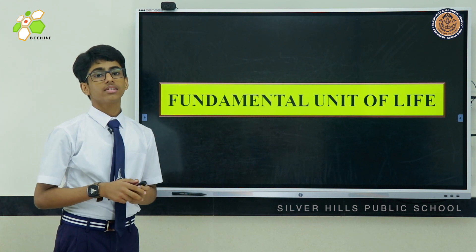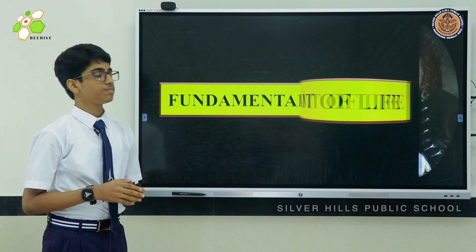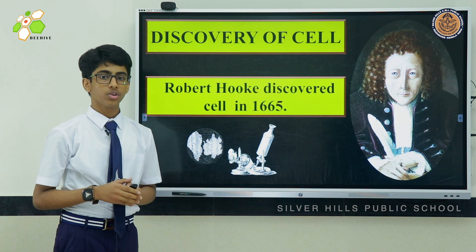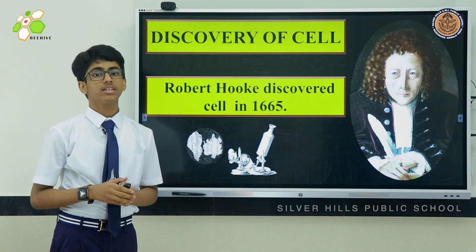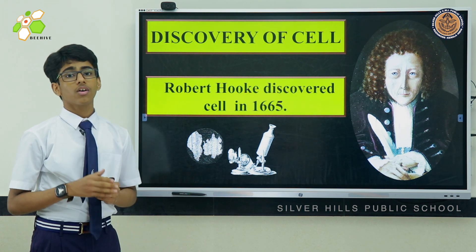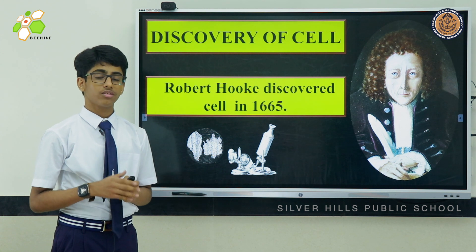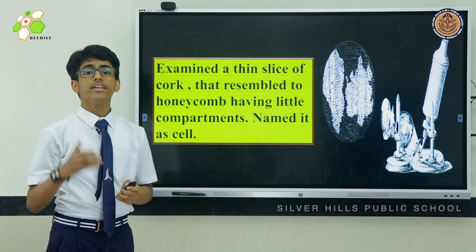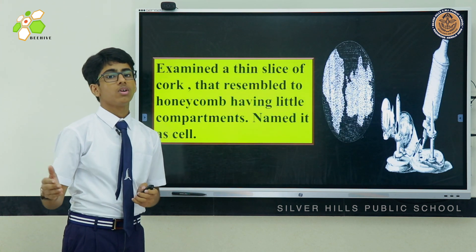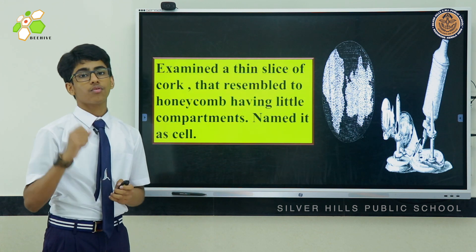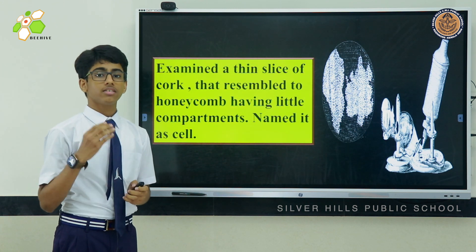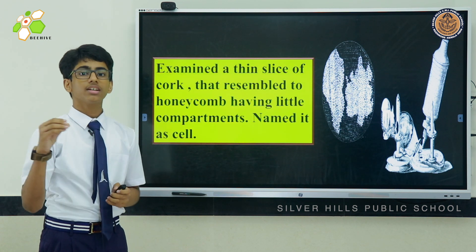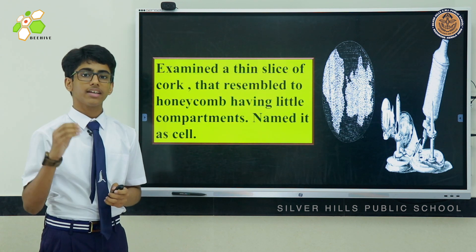Let us discuss the discovery of Cell. Cell was first discovered by Robert Hooke in 1665. This discovery was the greatest discovery in the history of science. He examined a thin slice of cork that resembled a honeycomb having little compartments. He named these little compartments as Cell.